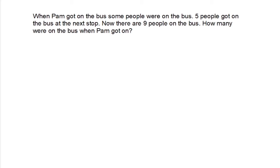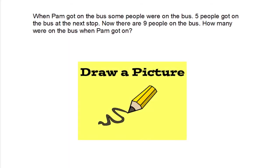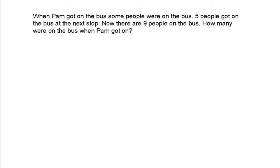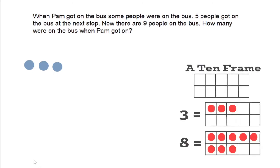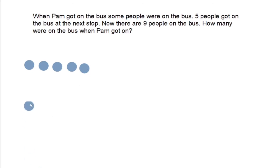We're going to talk in a future video about how quite often we combine strategies to solve problems. For this problem, I'm going to use the strategy of drawing a picture. I'm going to use dots, as we discuss in the draw a picture problem-solving strategy video — go watch that if you haven't yet. So we know there are nine people on the bus, and I'm going to organize my picture like a 10 frame — two rows of five. But because we have only nine, the 10 frame will not be filled.